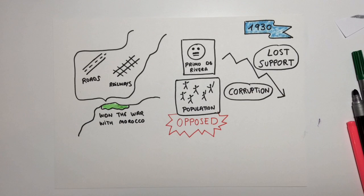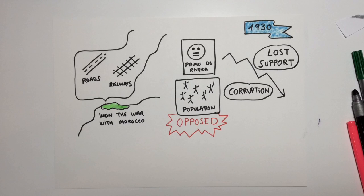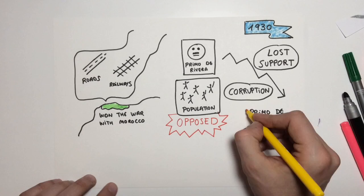In 1930, Primo de Rivera had lost the support of the king. Also, some matters of corruption, so he had to resign.